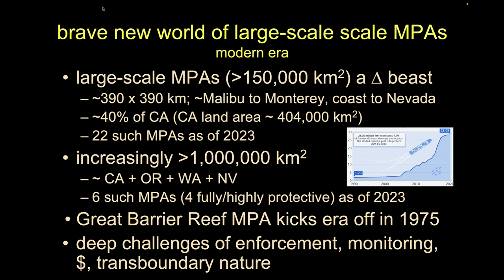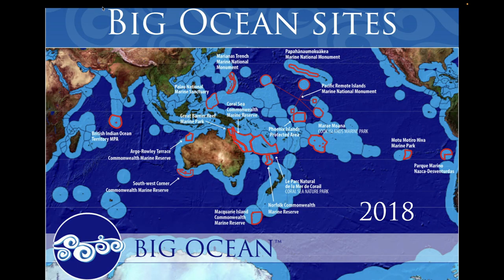The large-scale MPA concept really got going when the Great Barrier Reef was formally designated a marine protected area in 1975. These large-scale MPAs face tremendous challenges with measurement and particularly enforcement. This is the most recent map produced just before the pandemic, showing light blue for exclusive economic zones, dark blue for high seas, and red outlines indicating large-scale MPAs.